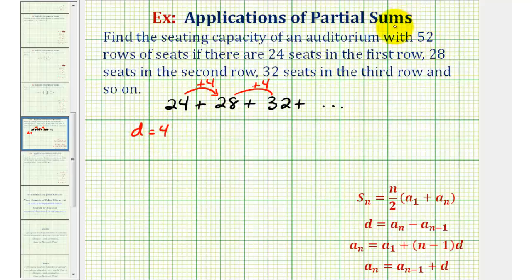Next, because we have 52 rows of seats, we know the number of terms in this series would be 52. We also know a₁, the first term, is equal to 24.